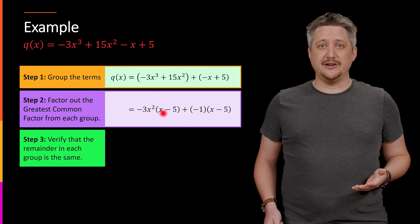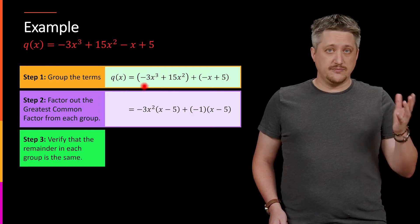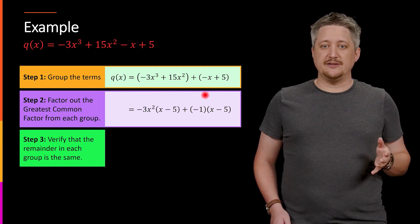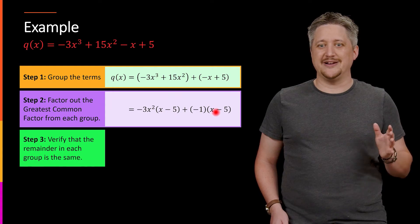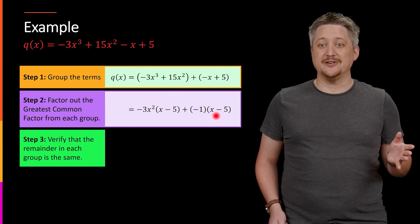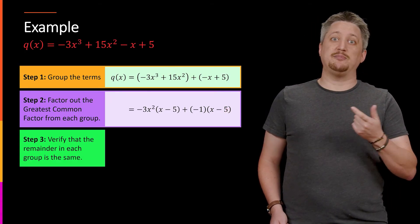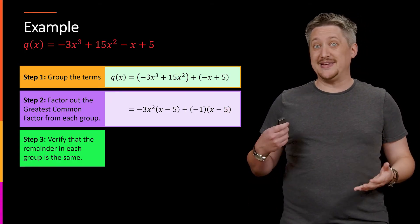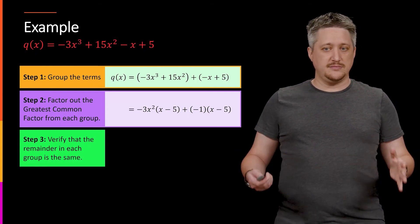Again, the important part here is to make sure that I have the same thing, x minus 5 and x minus 5. If, for example, I only pulled out the negative 3x² and I left the other one alone, I'm close, but I'm not there. I have x minus 5 and minus x plus 5. You could take a moment to see, like, I'm close, but the signs are off. What happens if I pull out a negative 1 to see if you can make the signs match and make it work.